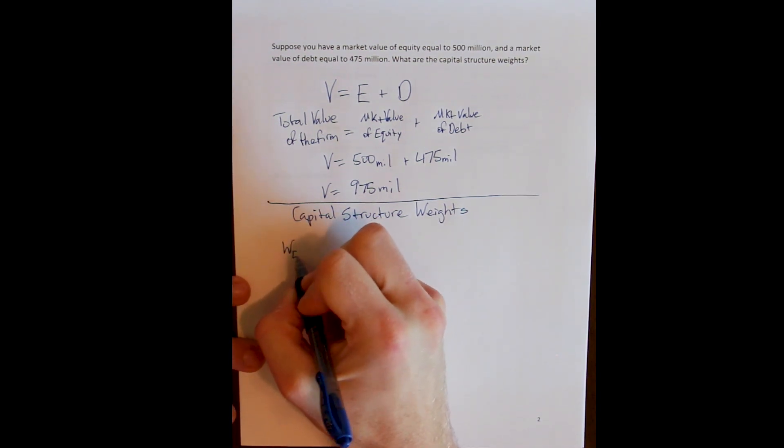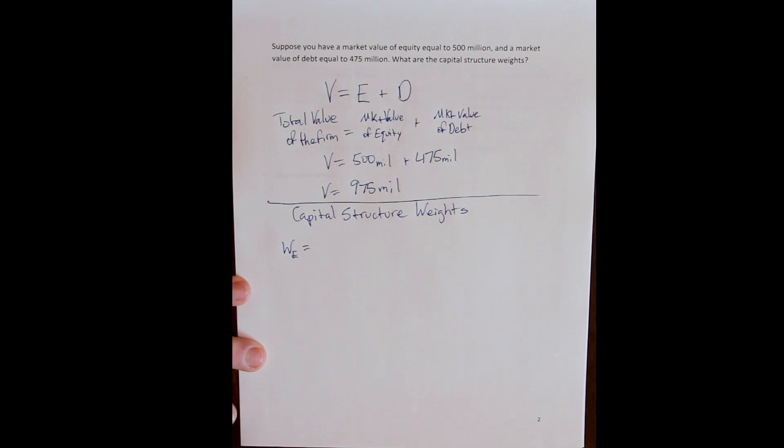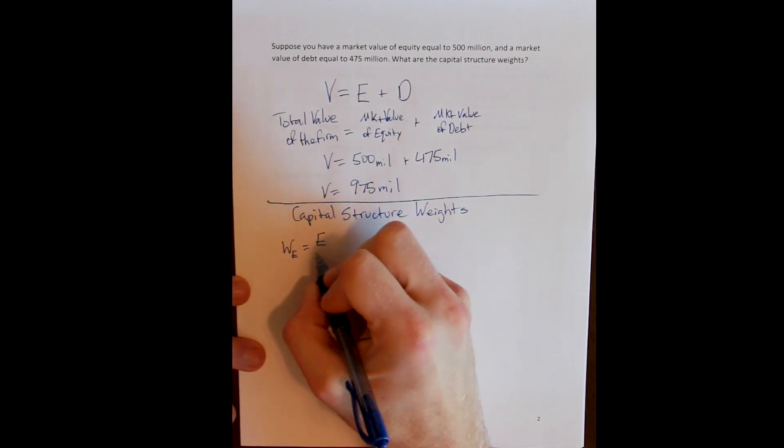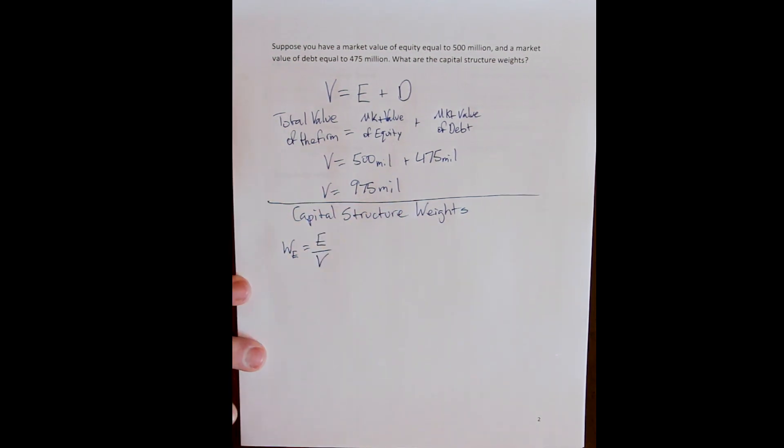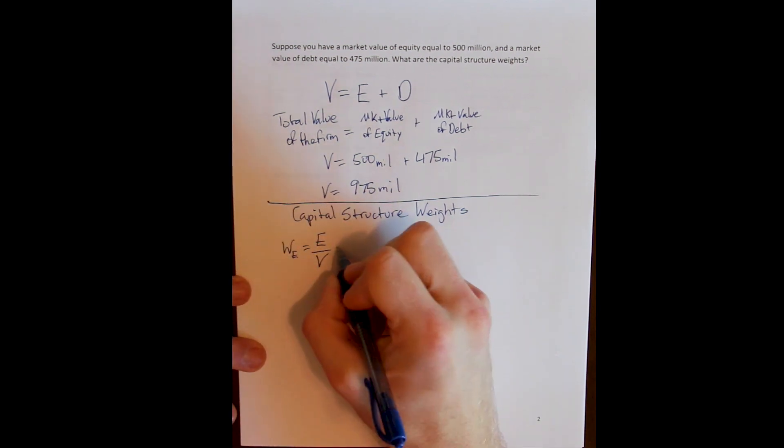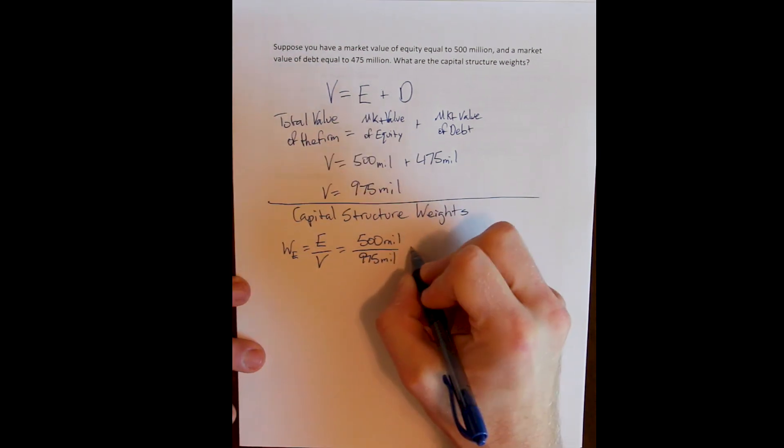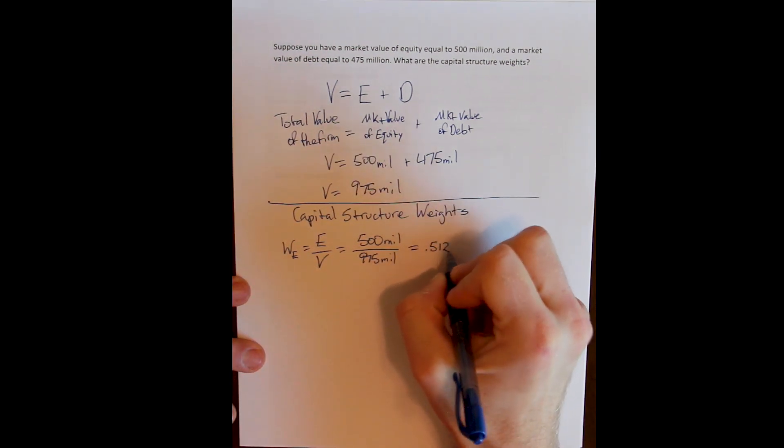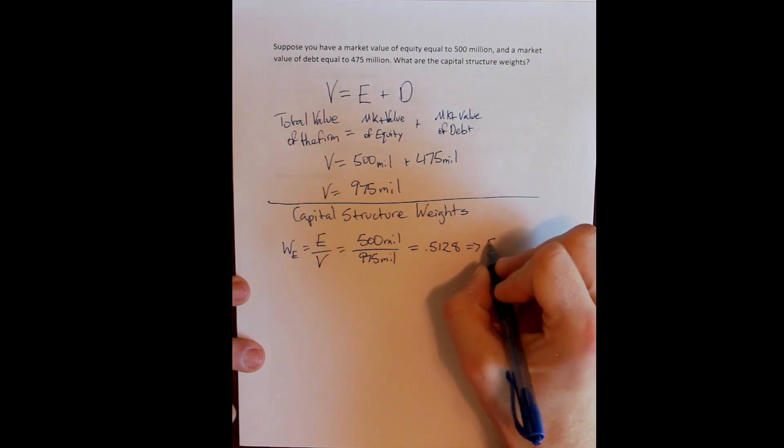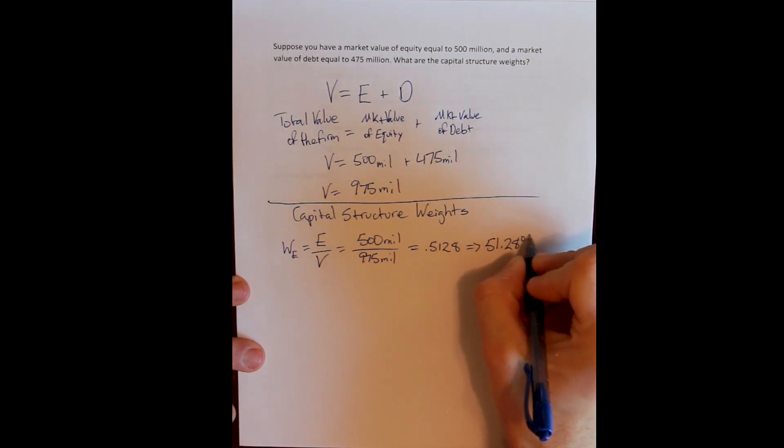So we can calculate the weight of the firm that is financed using equity by dividing the market value of equity by the total market value of the firm. And that's 500 million divided by 975 million or 0.5128, which is 51.28% of the firm.